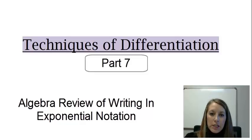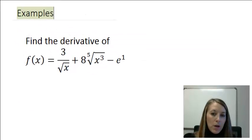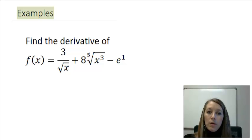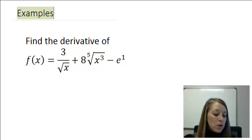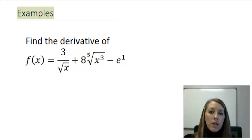We have learned all four of our differentiation techniques, and now we're going to start using them on more complicated examples. In this example, f of x equals 3 over the square root of x plus 8 times the fifth root of x cubed minus e to the first power. We want to take the derivative of this. We can actually do it using our four shortcuts — all we need to do is manipulate the problem into a format we know how to handle.